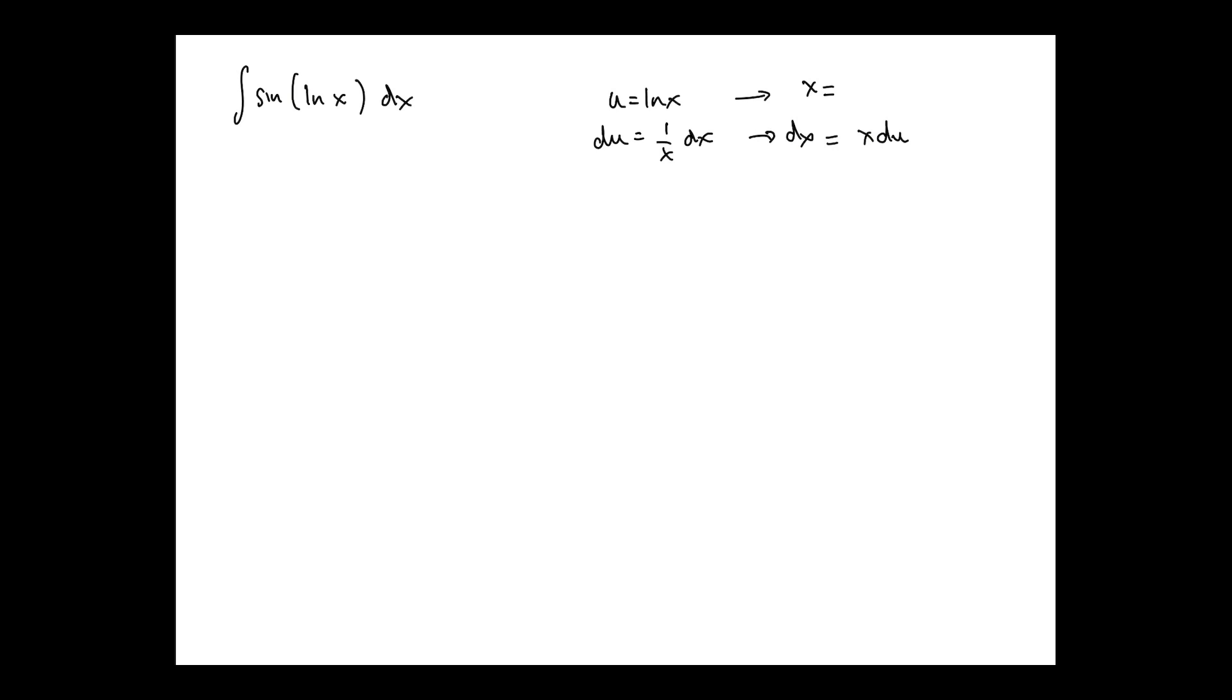Don't make me get a stick and come around and start beating you over the head. Thank you. All right. So what could I do here? I could write this as sine of u. And then what did I say dx was? x du. But what is x? Yeah. So I could write this as e to the u sine u du.